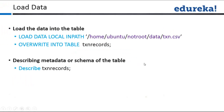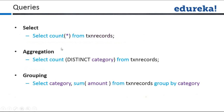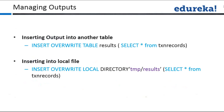We've already seen data loading: 'load data into table' from a local inpath. When you do 'describe transactions', you will see the schema of the table. There are different types of queries — 'select count(*)', 'select count(distinct category) from' the table which gives you distinct categories, and aggregation and 'group by category' to sum amounts by category.